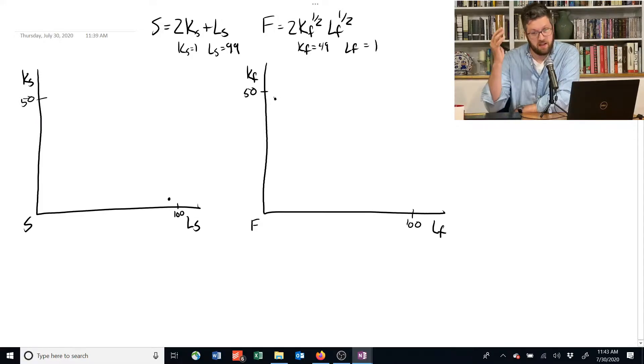These dots tell us how this economy is using its resources. Now we can add on to these isoquants to figure out how that translates into outputs. Remember, an isoquant is all combinations of capital and labor that generate the same amount of output.